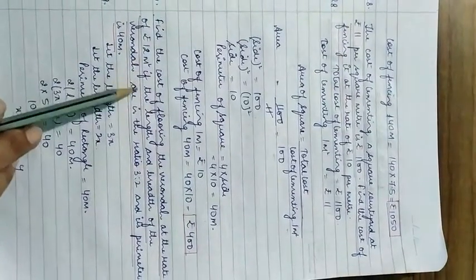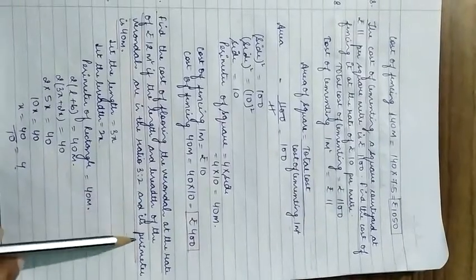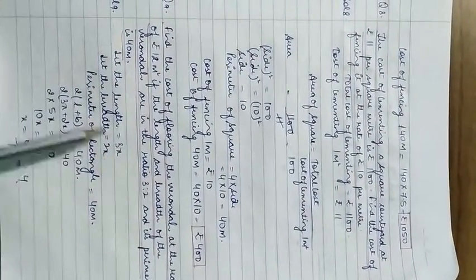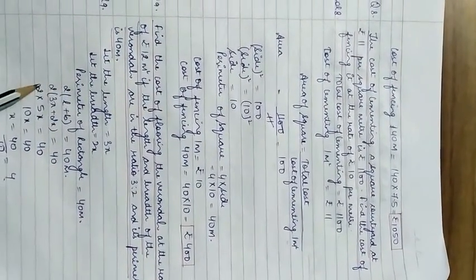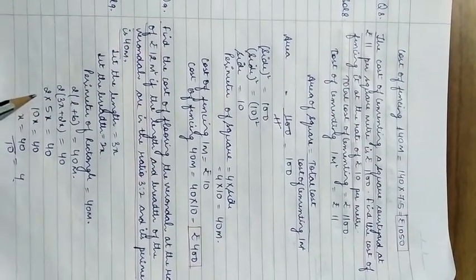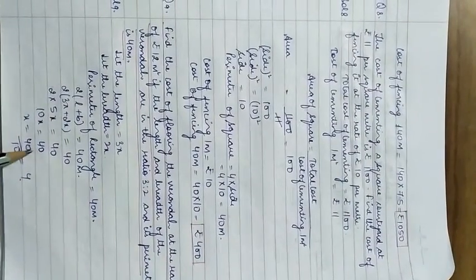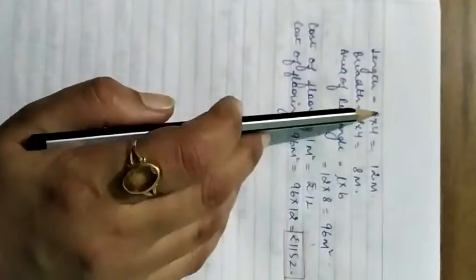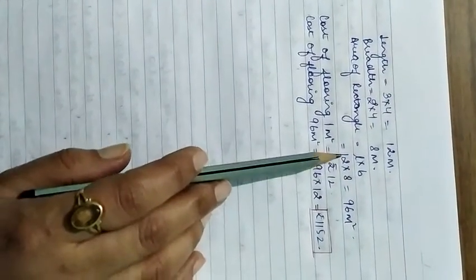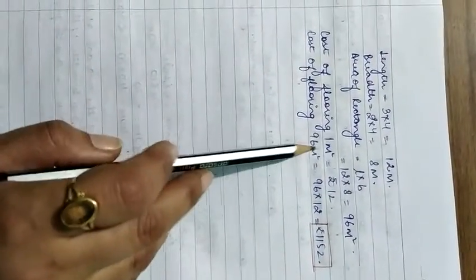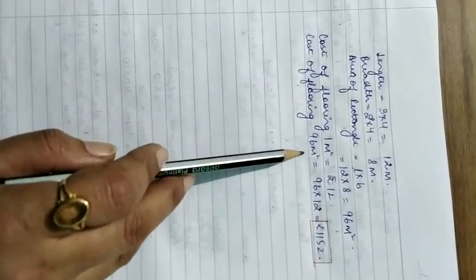Question 9: Find the cost of flooring a veranda at ₹12 per m² if its length and breadth are in ratio 3:2 and perimeter is 40 m. Let length = 3x, breadth = 2x. Then 2(3x + 2x) = 40, so 10x = 40, x = 4. Length = 12 m, breadth = 8 m. Area = 12 × 8 = 96 m². Cost = 96 × 12 = ₹1152. This completes Chapter 20.